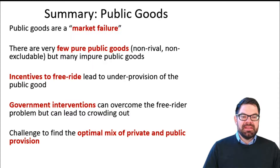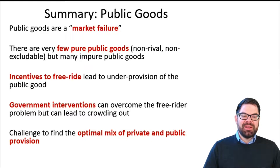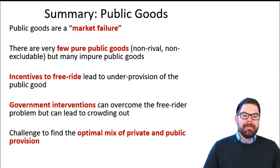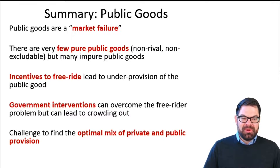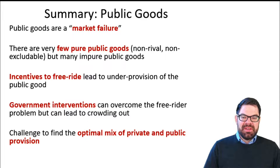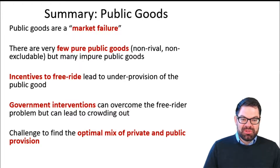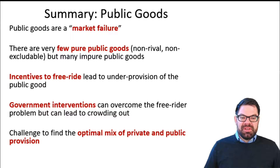The biggest challenge with public goods provision is the incentive to free-ride. Public goods depend on contributions and effort of people and firms, but because we cannot exclude anyone from consuming them, there is always an incentive to free-ride. If every agent acts in their own best interest, that leads to under-provision — their best action is to contribute little or nothing, but to consume, assuming everyone else will contribute. If everyone thinks that way, the public good doesn't get provided at all, which is not an efficient outcome.